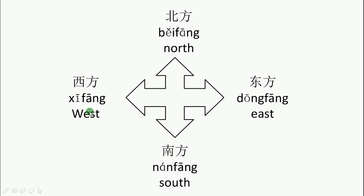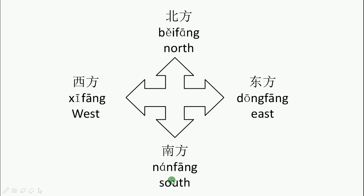We only use 西方 and 东方 to describe the western part of the world and the eastern part of the world. But we can use 北方 and 南方 to describe the north part or south part of a country or a region.